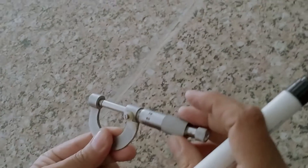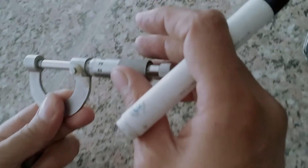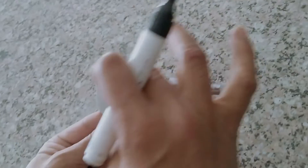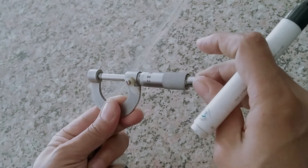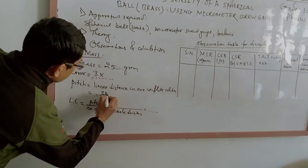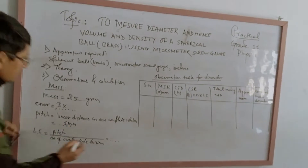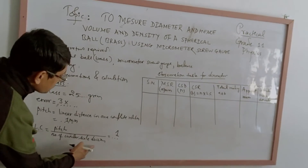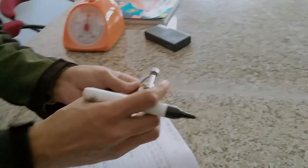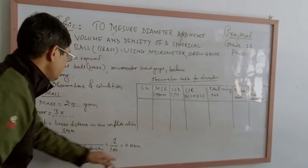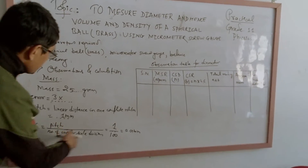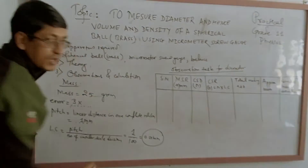One complete rotation gives a linear distance on the main scale of 1 mm, which is called the pitch. Pitch divided by the number of circular scale divisions, which is 100, gives the least count. So the least count is equal to 0.01 mm.